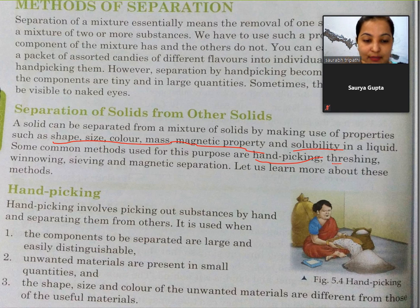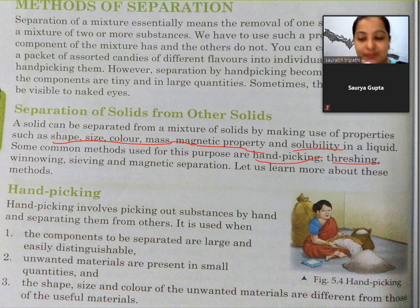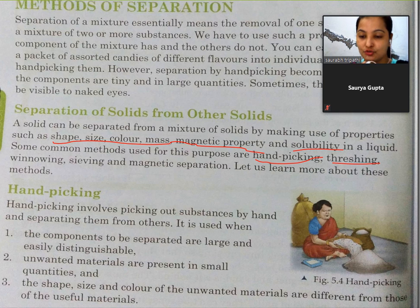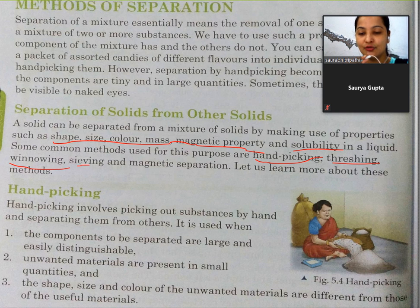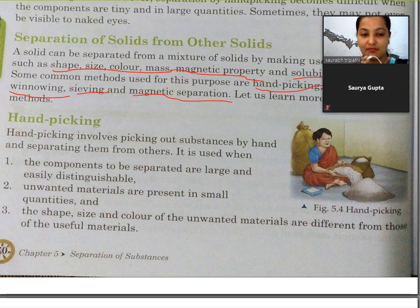Winnowing means soup ke through nikalna - soup mein se unwanted particles ko alag karna. Sieving hota hai aapka chalni ke through usko chalna. Aur magnetic separation yaani ki jo magnet ke through usko alag karna. Ab main inke baare mein descriptive way mein padhaengi. Yeh dekhi - here you can see the picture of handpicking. Haath se uthha karke, jaise agar aap chawal binaate hain ya kisi aur grain ko binaate hain, to usme aap dekhte hain ki haath se uthha karke alag karte hain.